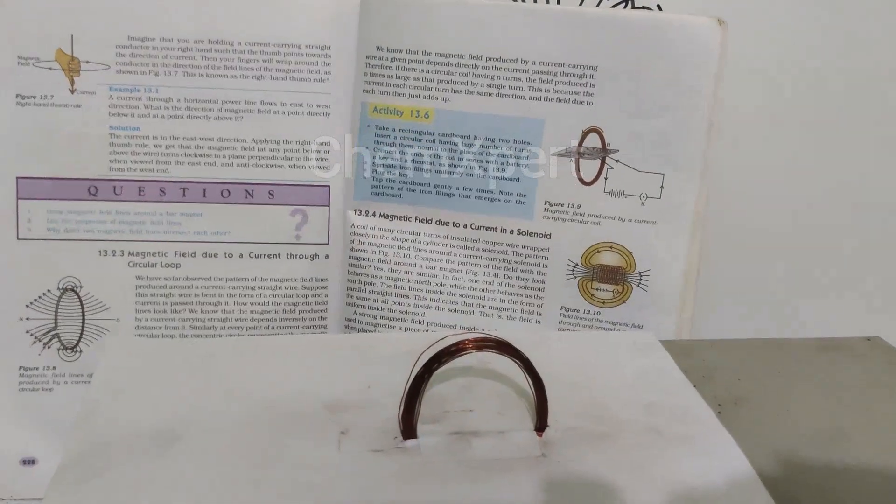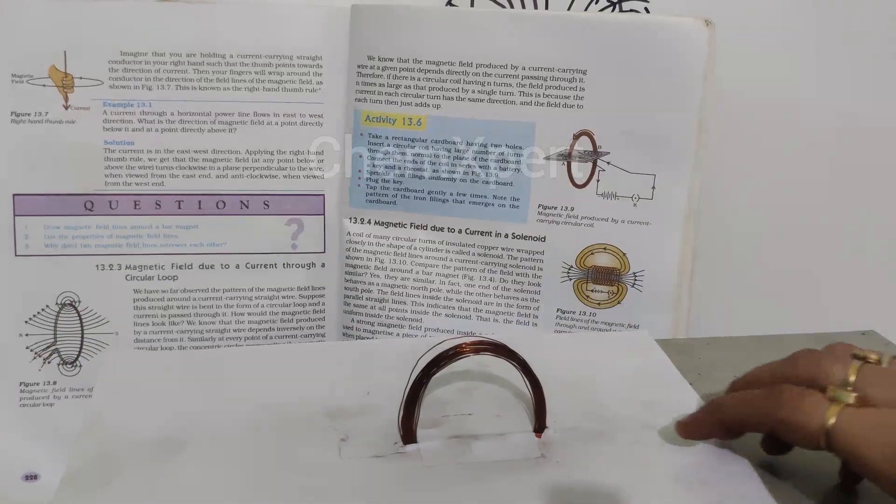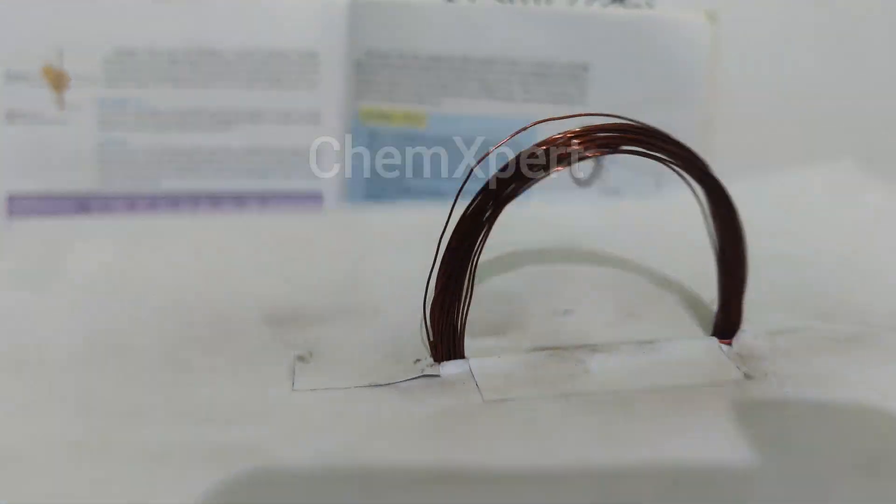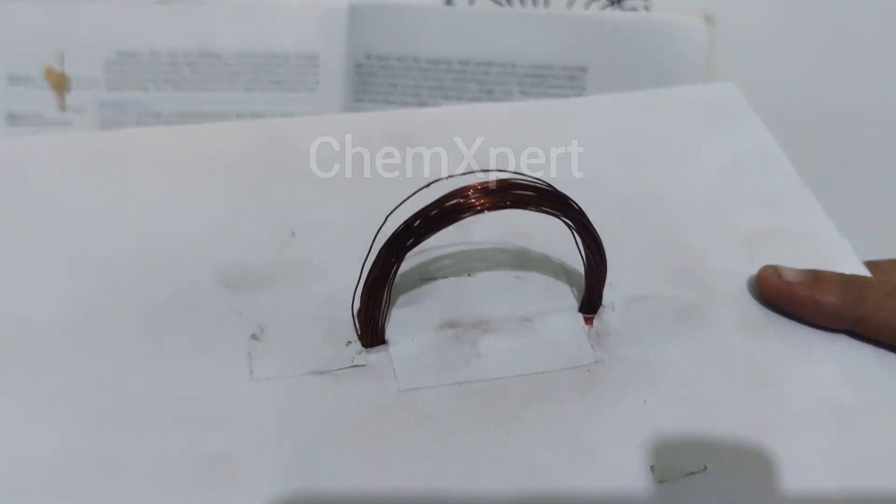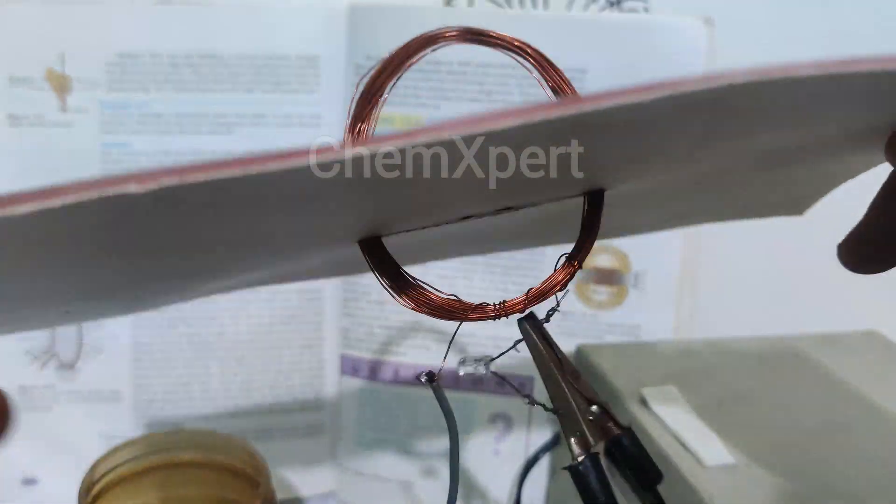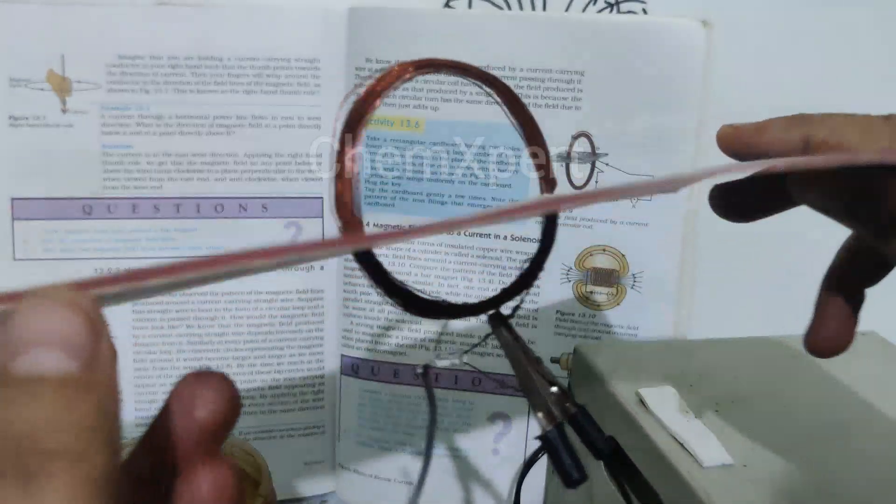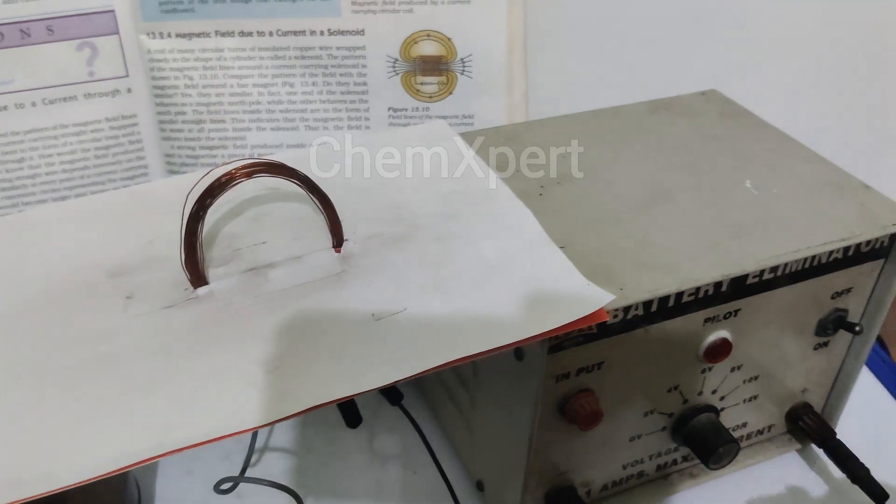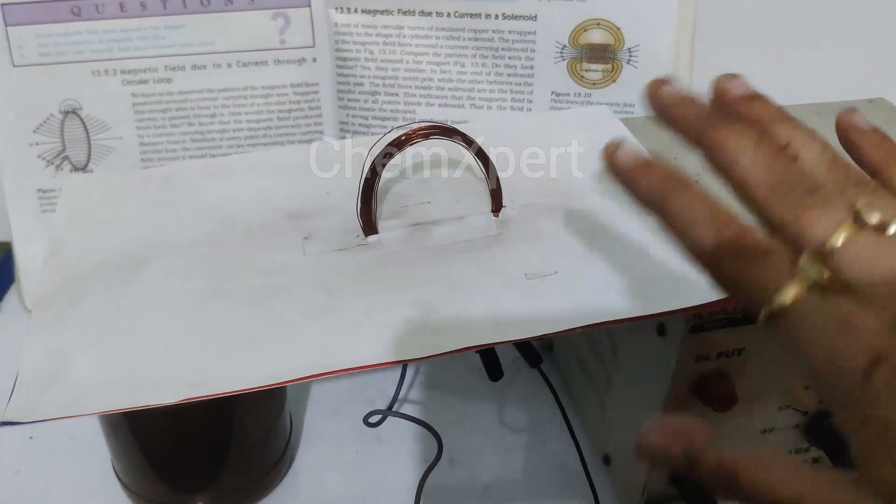This is the sixth activity, for which we require a circular loop. Here is a circular loop which I have passed through this cardboard. The two ends of the circular loop are joined with a battery. You can observe the two ends which I have joined with the source which will provide electricity to this arrangement.